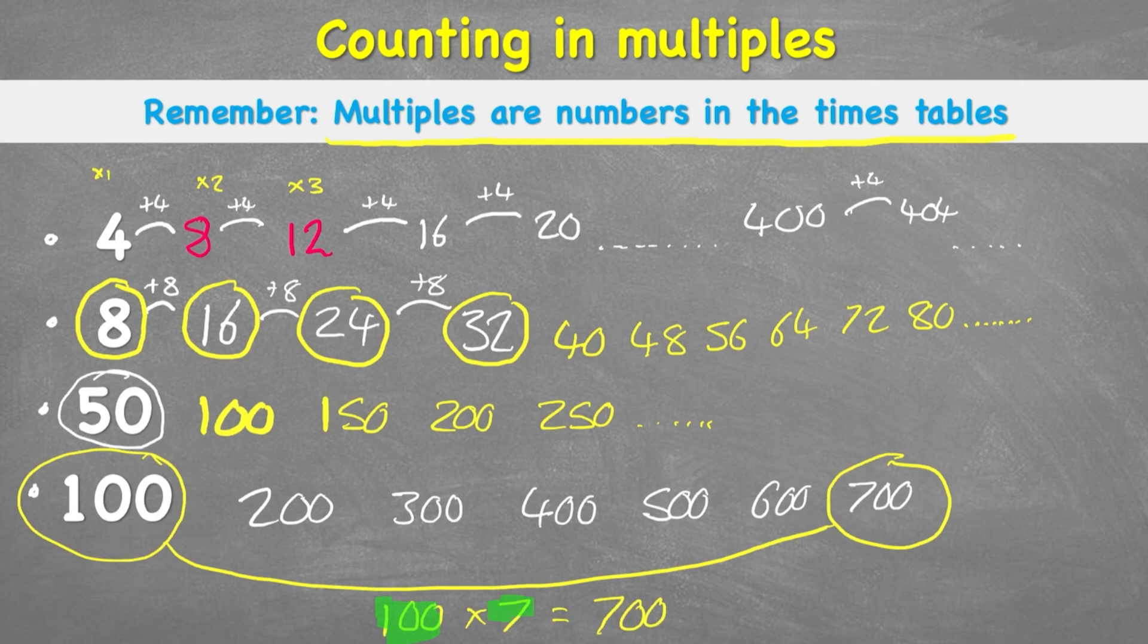We're multiplying it by another number and we get 700. Therefore 700 is a multiple of 100. It's also a multiple of 7. But we'll get to that in another lesson.